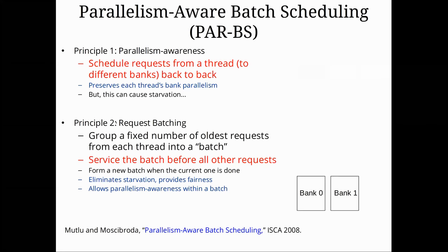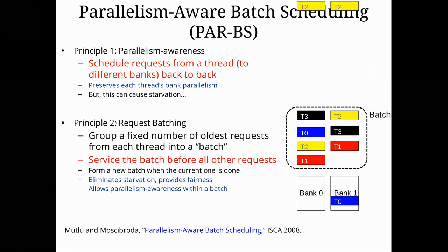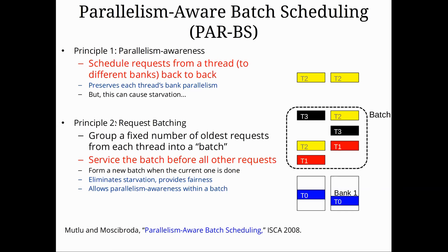Looking at the animation: we have two banks and a bunch of requests from four threads — T0, T1, T2, and T3. We put those into a batch and can reschedule them however we want. We go with T0 first — those requests are serviced in parallel across the banks, giving us that nice overlap where we only have about one bank access latency instead of two. In the meantime, T2 has come in with more requests, but those are not pulled into the current batch — they wait for the next one.